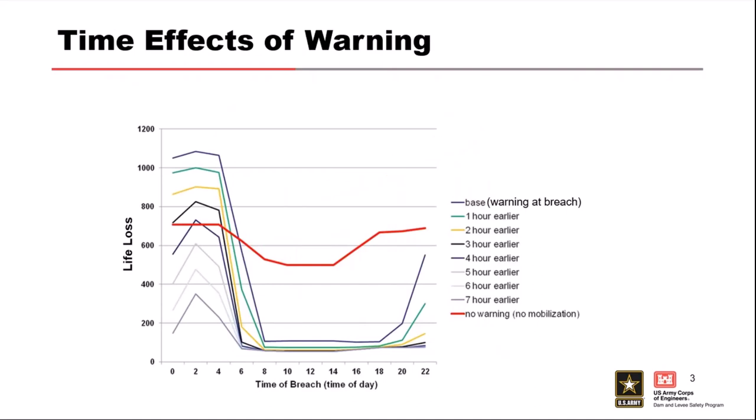All right, what do you see here? Anyone can answer even if you were there last month. Anything jump out at you? Anything look odd? This red line in the middle doesn't jump out to anybody? That's, if you can see it, it's no warning, no mobilization right here. Why do you think life loss takes a dive right at 6am? People are way easier to respond to warnings. Maybe this is a residential area and people are going to work, right? So far fewer people there when you're looking at that life loss distribution over the course of the day.